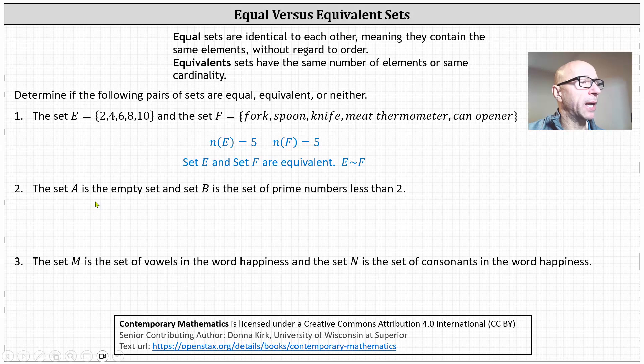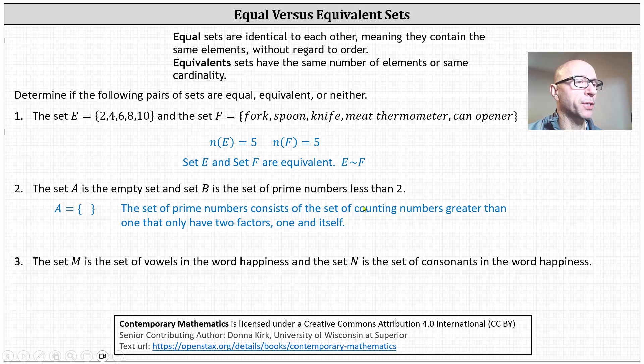Number two, set A is the empty set, which is a set containing no elements. And set B is a set of prime numbers less than two. So again, we know set A is the empty set with no elements. Set B is a set of all prime numbers less than two. Recall that prime numbers consists of the set of counting numbers greater than one that only have two factors, one and itself.